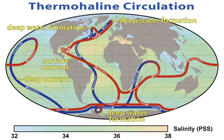Direct estimates of the strength of the thermohaline circulation have been made at 26.5 degrees north in the North Atlantic since 2004 by the UK-US RAPID Program. By combining direct estimates of ocean transport using current meters and subsea cable measurements with estimates of the geostrophic current from temperature and salinity measurements, the RAPID Program provides continuous, full-depth, basin-wide estimates of the meridional overturning circulation. The deep water masses that participate in the MOC have chemical, temperature, and isotopic ratio signatures and can be traced, their flow rate calculated, and their age determined, including using Pa-231/Th-230 ratios.